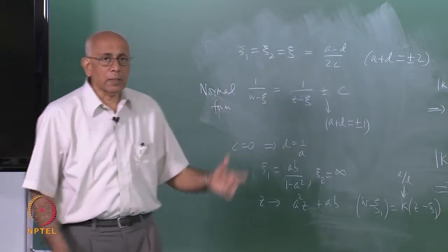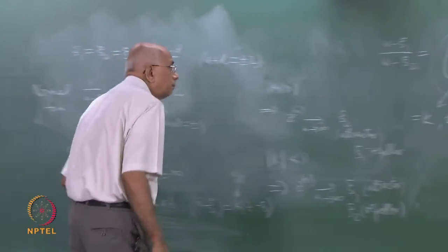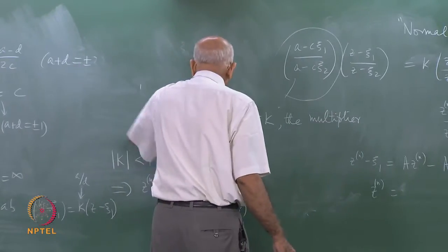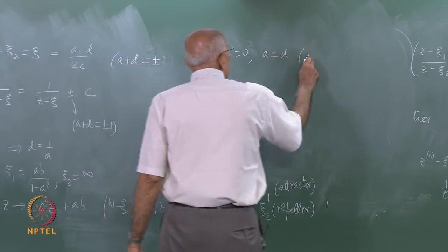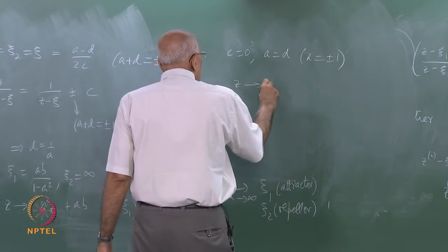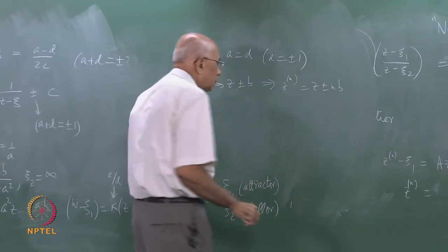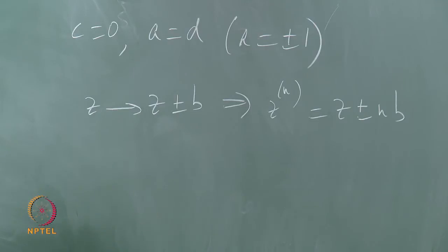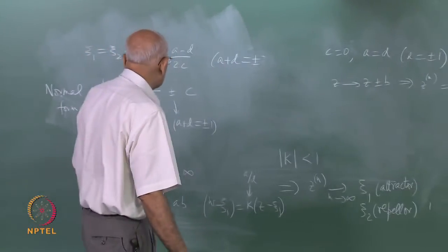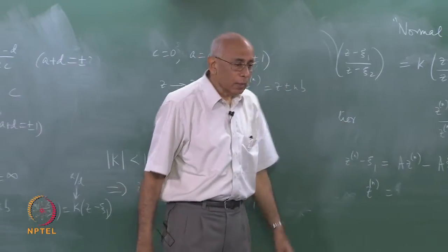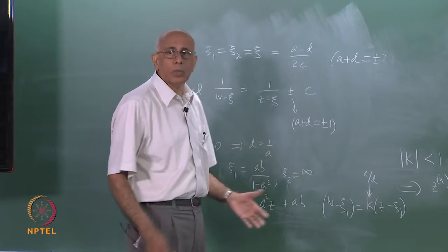The last case is a pure translation z goes to z plus or minus b, when both fixed points are at infinity (c = 0, a = ±1). Then z_n = z plus or minus n·b — it just shifts by n times. Those are trivial cases — just linear transformations. The non-trivial cases are the coincident fixed point case and most importantly the general normal form. I leave it as an exercise to work out the asymptotic behavior in these cases.